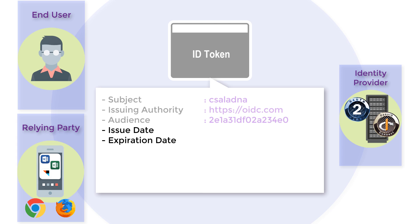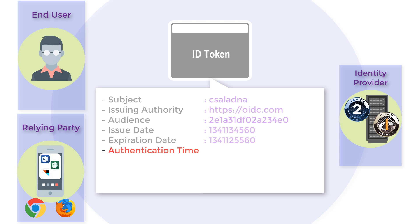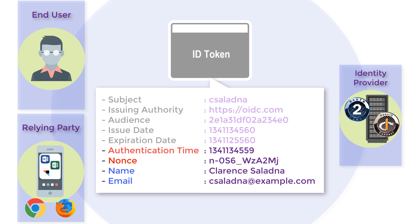There are also optional claims that help the relying party validate the ID token, such as authentication time — which shows the time the end user was authenticated — and nonce values, which mitigate replay attacks. The token may also contain additional requested claims about the subject, such as name and email address.